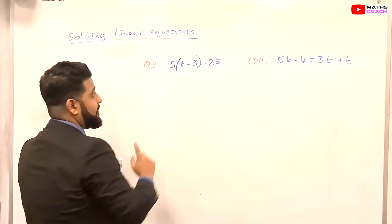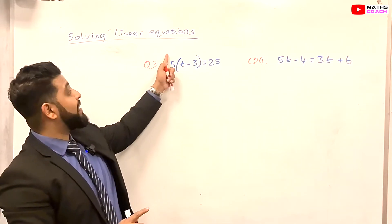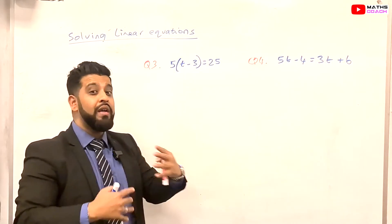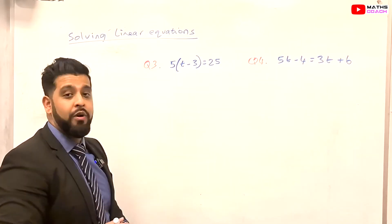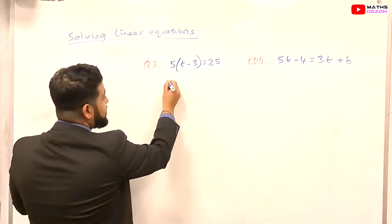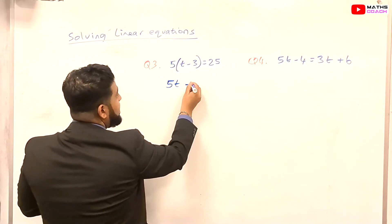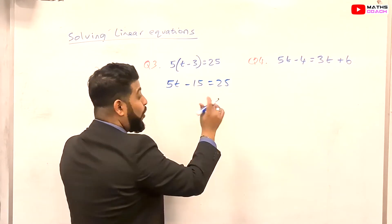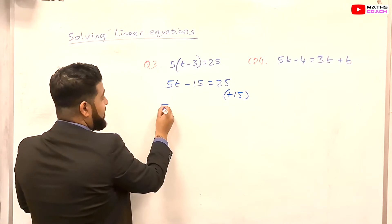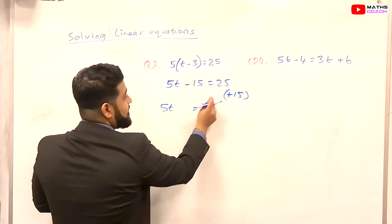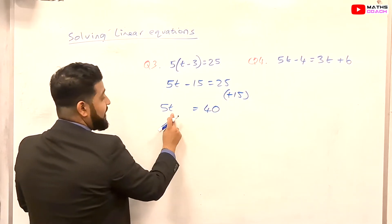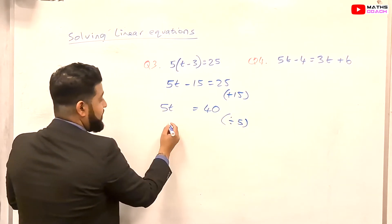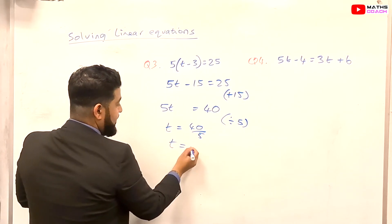For 5(t minus 3) equals 25, we have a choice: expand the bracket, or divide by 5 since 5 is a factor of 25. Let's start by expanding the bracket: 5t minus 15 equals 25. Then add 15 to both sides — 25 plus 15 is 40 — so we have 5t equals 40. Dividing both sides by 5 gives t equals 8.